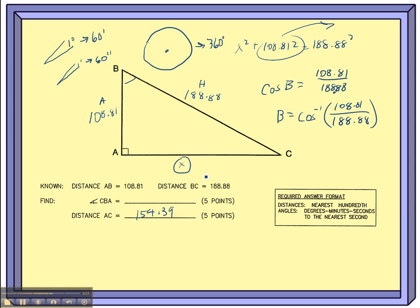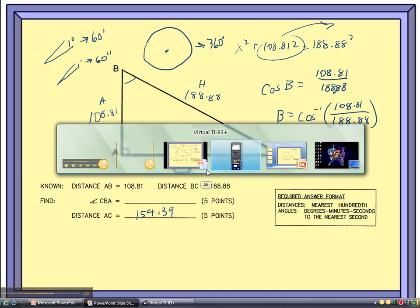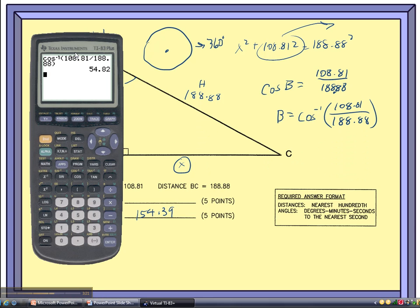So our calculator can do that conversion for us in a matter of seconds. And it goes like this. I go to the angle measurement, angle measure, angle menu. It's number four here. It says arrow DMS. That means it's going to convert it into degrees, minutes, and seconds for me.